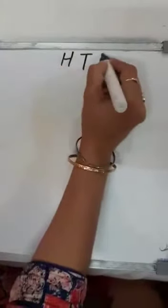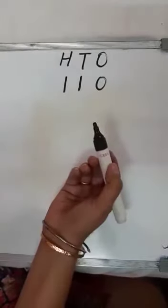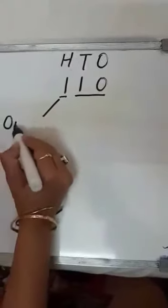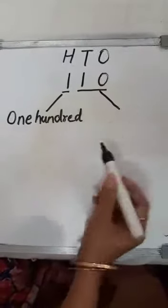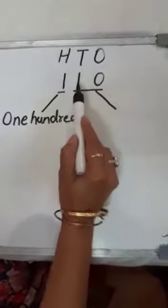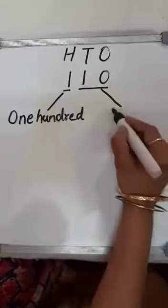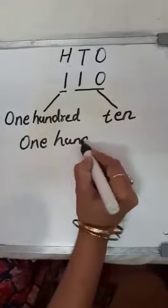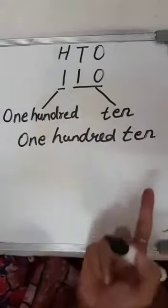Similarly, for the number 110, we divide it into two parts. The first part is one hundred. At the 10s place we have 1 and at the 1s place we have 0, so the second part is ten. The number name will be one hundred and ten.